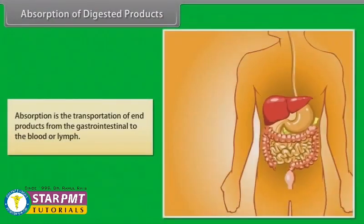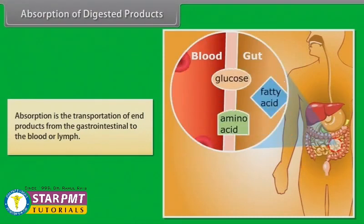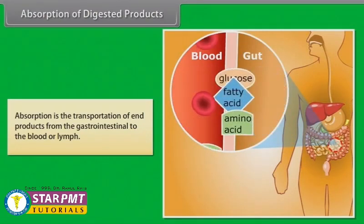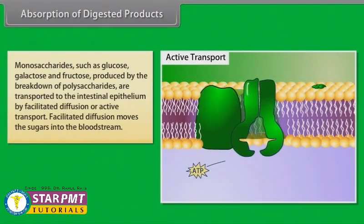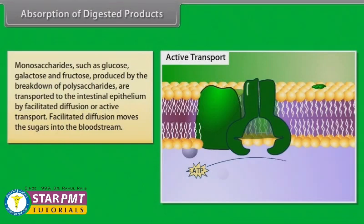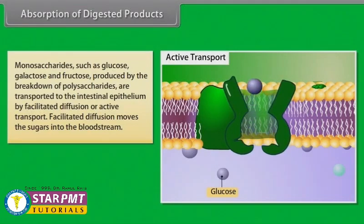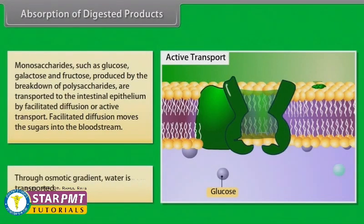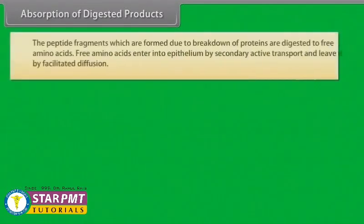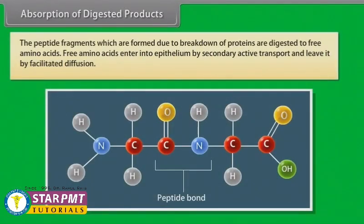Absorption is the transportation of end products from the gastrointestinal tract to the blood or lymph. Monosaccharides such as glucose, galactose, and fructose, produced by the breakdown of polysaccharides, are transported to the intestinal epithelium by facilitated diffusion or active transport. Facilitated diffusion moves the sugars into the bloodstream. Water is transported through osmotic gradient. Peptide fragments formed from protein breakdown are digested to free amino acids.